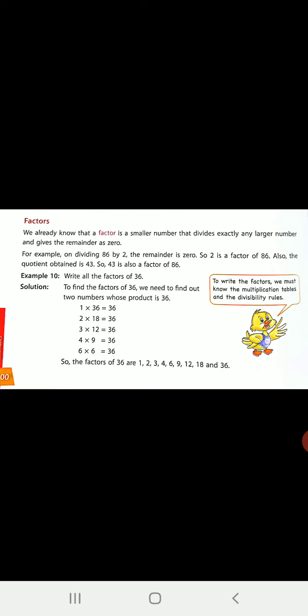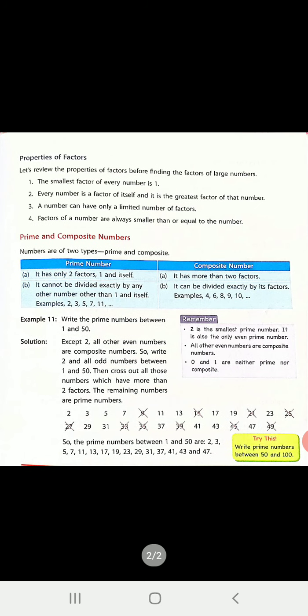Now let us see some properties of factors. There are a few criteria for factors. The smallest factor of every number is 1, so every number will go in the first table. Every number is a factor of itself, and it is the greatest factor of that number. See the example we have seen: the number 36 was the largest factor of the given number.